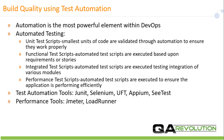Automation is the most powerful element within DevOps. Here are a few things that can be done in terms of test automation. Unit test scripts: the smallest units of code are validated through automation to ensure they work properly. Functional test scripts: automated test scripts are executed based on requirements or stories. Integrated test scripts: automated test scripts are executed testing integration of various modules. Performance test scripts: automated test scripts are executed to ensure the application is performing efficiently. A few test automation tools include JUnit, Selenium, UFT, APM, and C-Test. A few performance test tools are JMeter and LoadRunner.